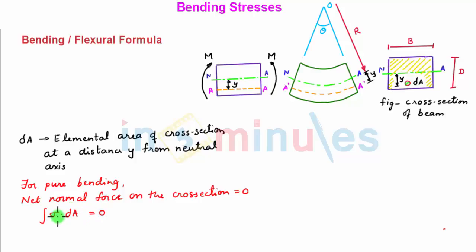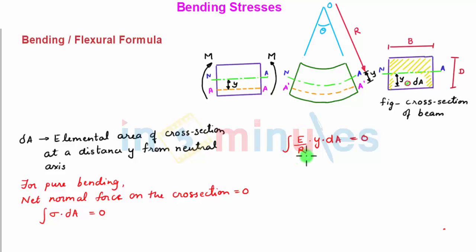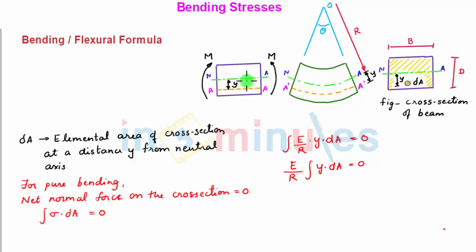Mathematically, we write this as the integral of sigma multiplied by dA equals zero. Substituting the value of sigma from the previous equation, we get the integral of (E/R) × Y × dA = 0. Since E/R is constant, we take it out: E/R × integral of Y dA = 0. This indicates the condition that the neutral axis passes through the centroid of the section.